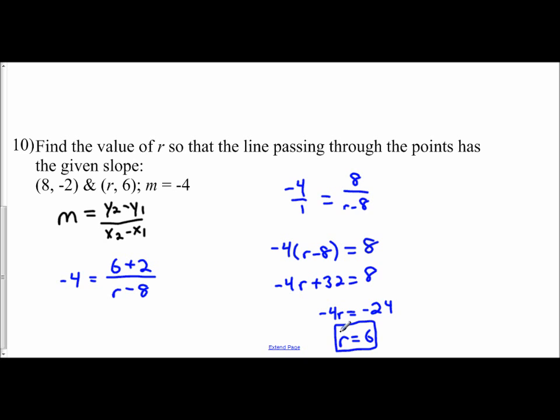And that is how you apply your slope to find the value of a missing coordinate. Start with the formula, plug in what you know, simplify, set up a cross multiplication, and then solve for what you don't know.